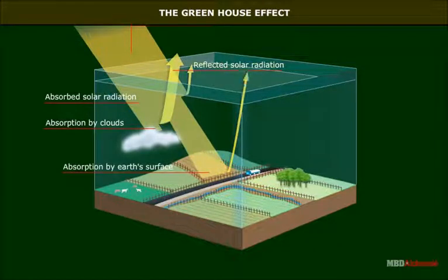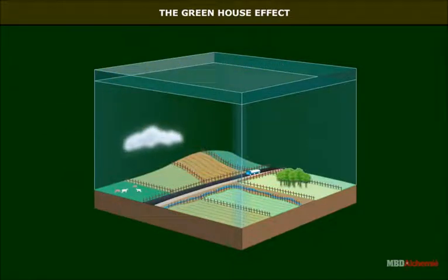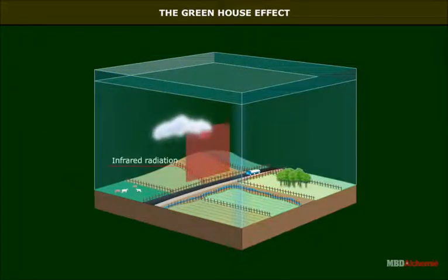This process even happens during the daytime. The greenhouse allows sunlight to enter but does not allow the internal heat to go out. Pollutants in the atmosphere are creating heat sinks and raising the average mean temperature of the earth. This is known as global warming.